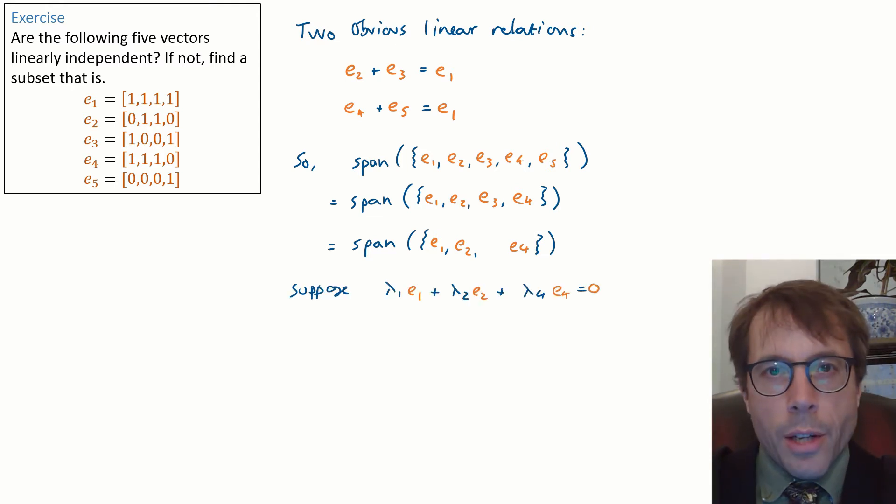Well all we have to do is we write down the equation for a linear relationship between them. Lambda 1 e1 plus lambda 2 e2 plus lambda 4 e4 equals zero. Or writing out the vectors in full we get this.